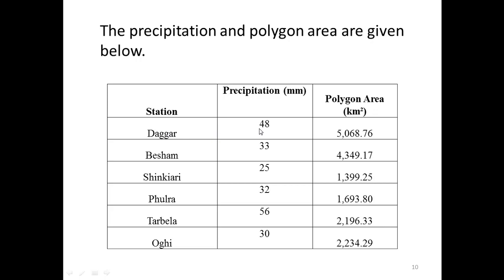Precipitation at Dhagar station is 48 mm and the polygon area is 5068.76 square kilometers. Precipitation for Bisham is 33 mm with area 4349.17 square kilometers. For Shinkari the precipitation is 25 mm, Kolara 32 mm, Tarbela 56 mm, and Ogi 30 mm, with their respective polygon areas in square kilometers.